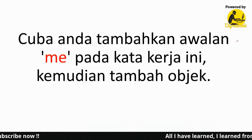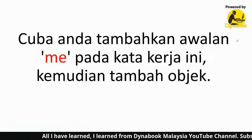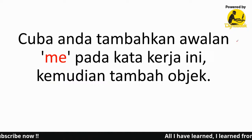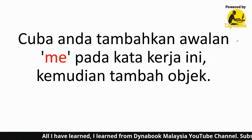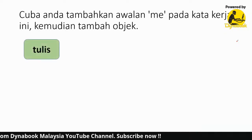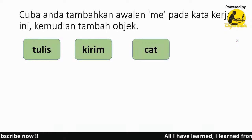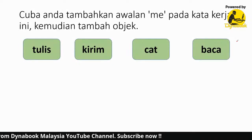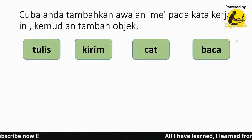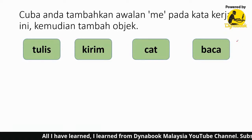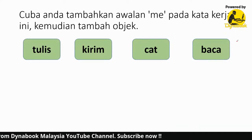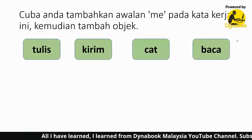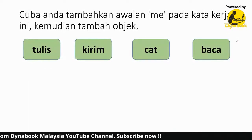Sebelum kita bergerak lebih lanjut, ada satu kuiz sikit. Cuba anda tambahkan imbuhan awalan pada kata kerja ini, kemudian tambah objek. Contohnya: tulis, kirim, cat, dan baca. Adik-adik cuba masukkan, tambahkan imbuhan awalan pada kata kerja ini. Lepas tu, kemudian bolehlah tambah satu objek. Cikgu bagi 30 saat.